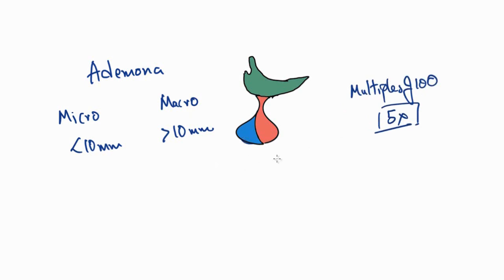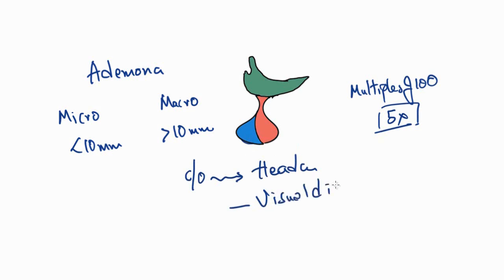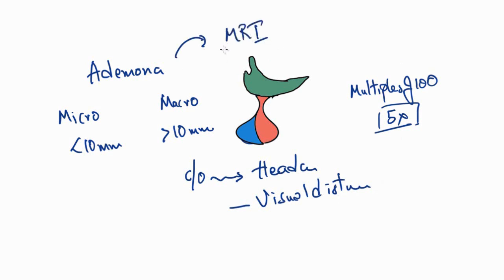Persons with an adenoma usually present with clinical features like headache and visual disturbances. Not all persons with elevated prolactin have adenoma — before diagnosing adenoma, all other causes need to be ruled out first. Adenoma is diagnosed by MRI, where the size of the pituitary is measured and correlated with prolactin levels to make the diagnosis.